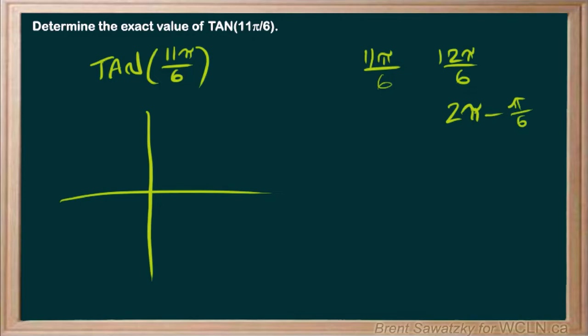If we were to draw that on a unit circle, we could say there's our line, and we're going all the way around, and here's where we end up. And so, the angle in there would be our leftover pi over 6.